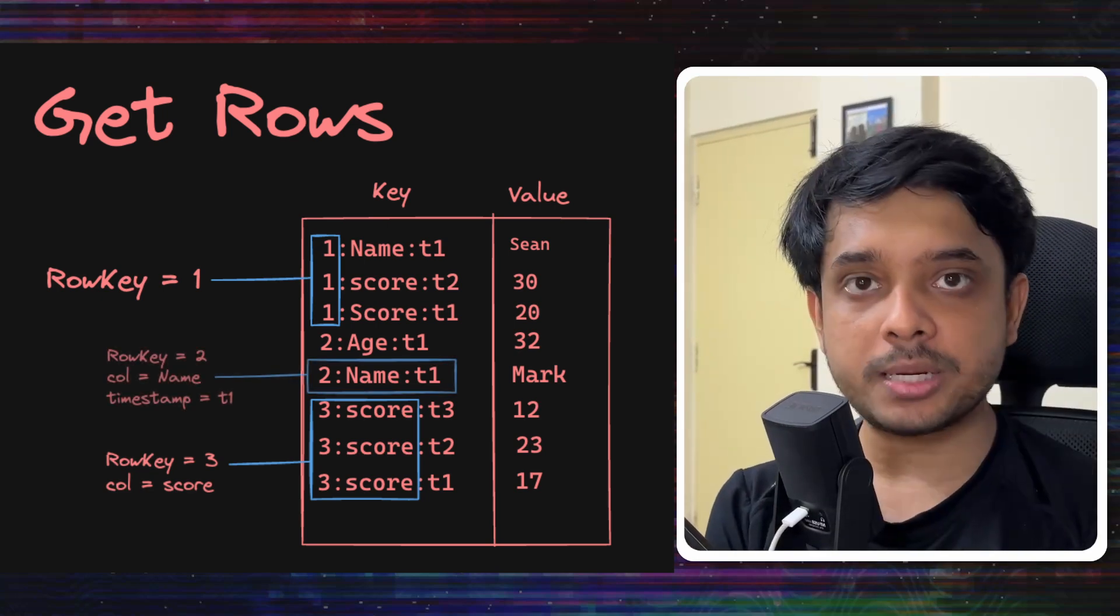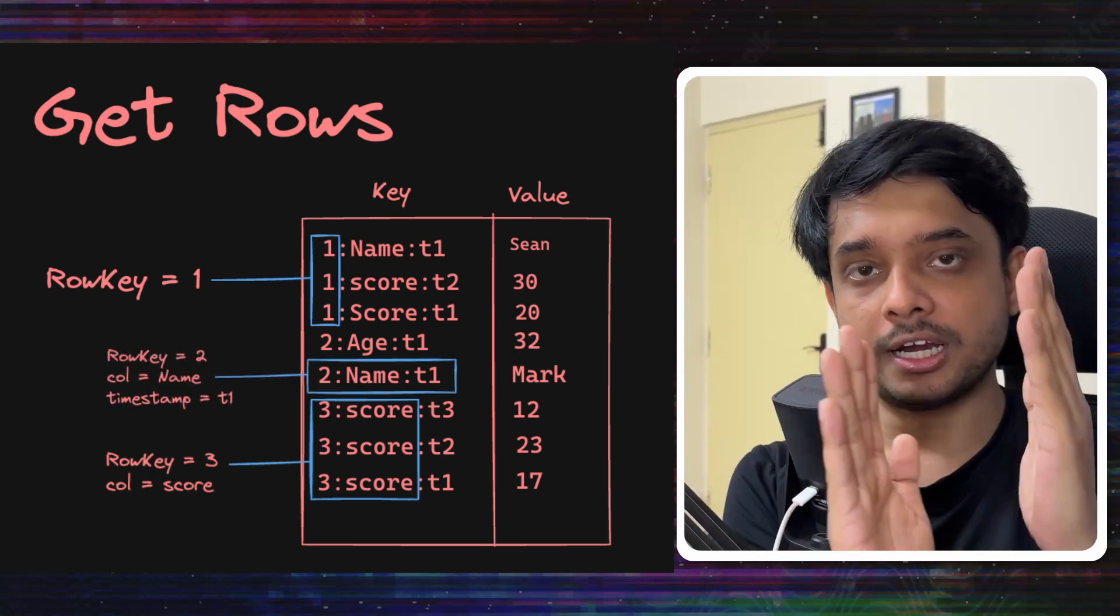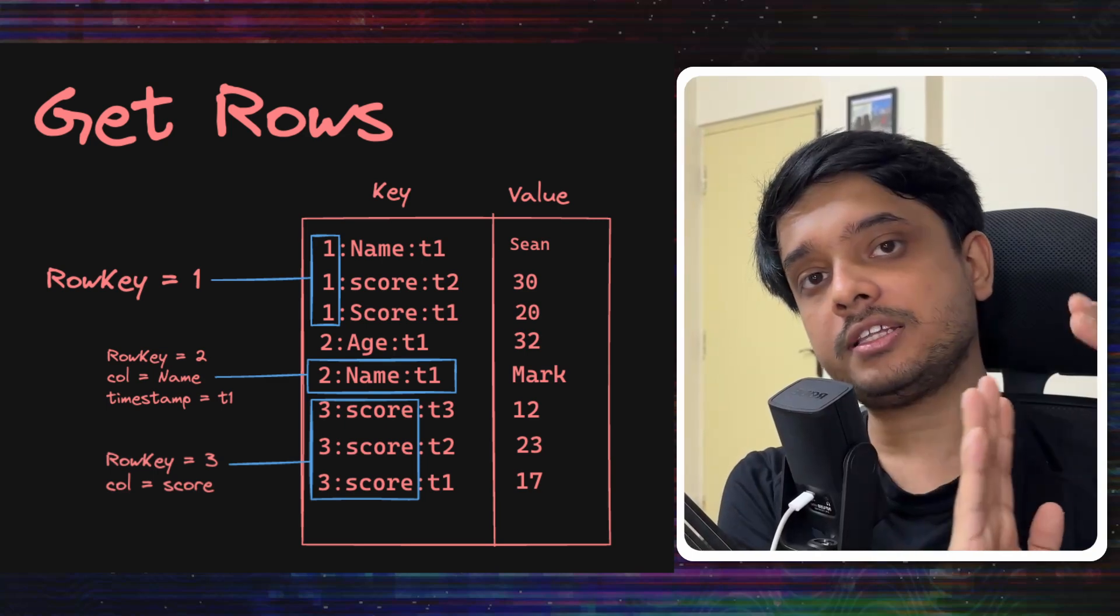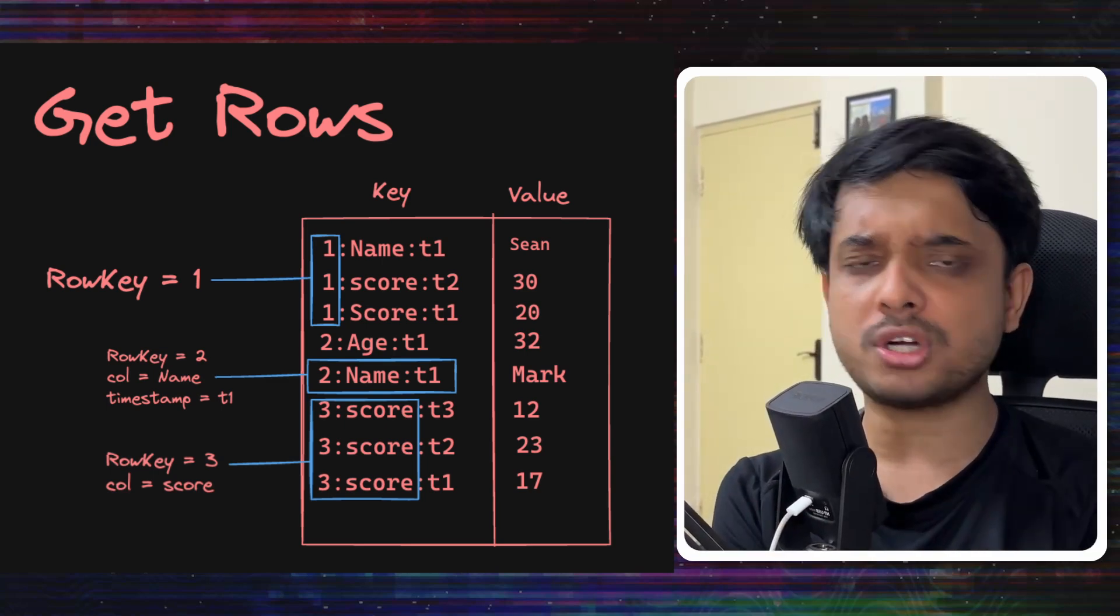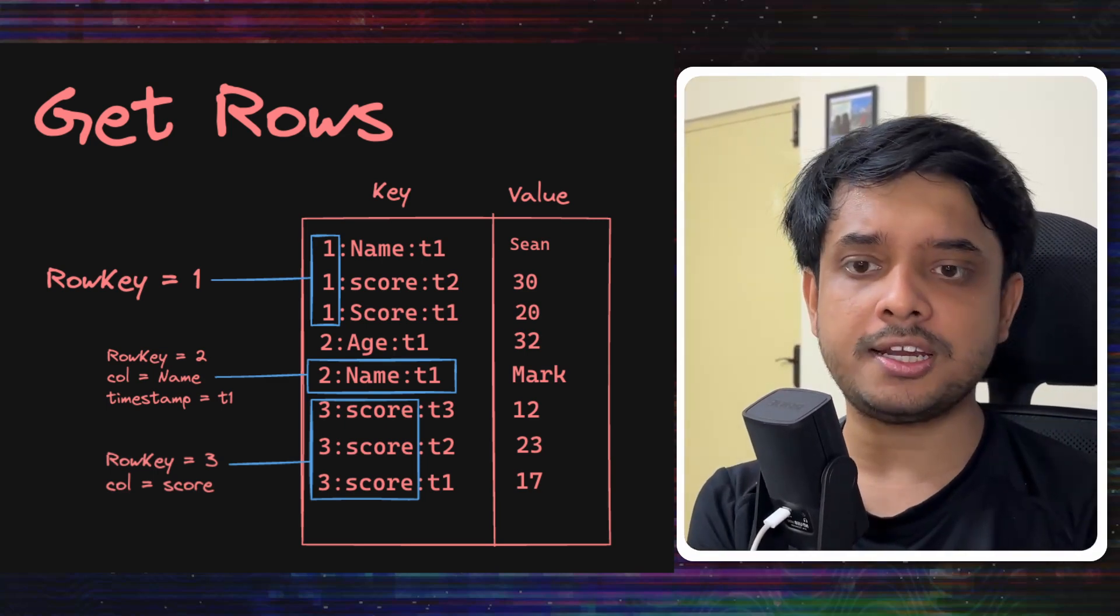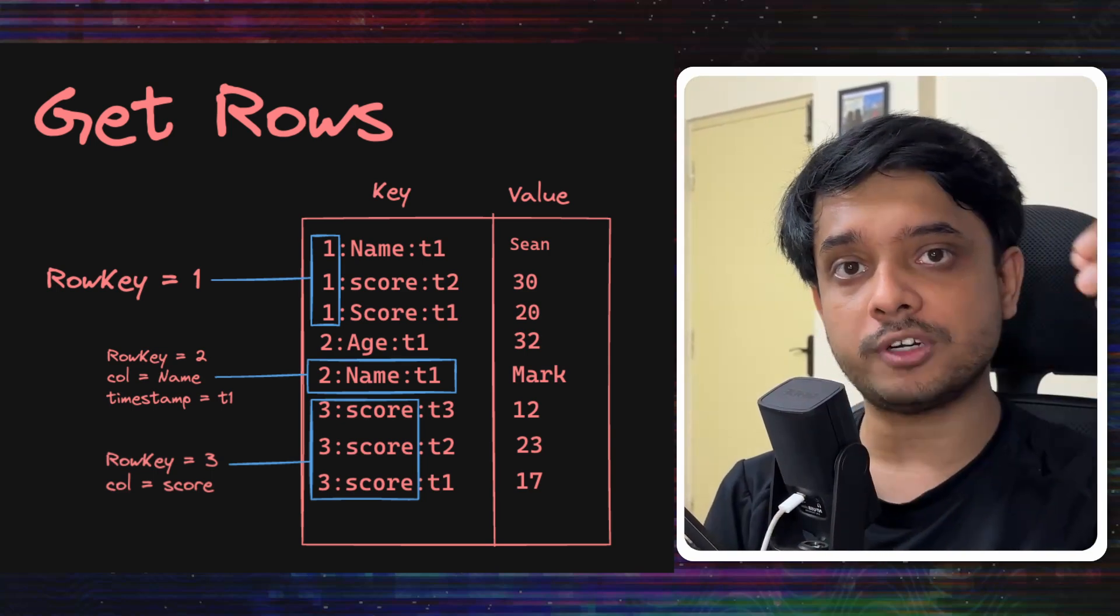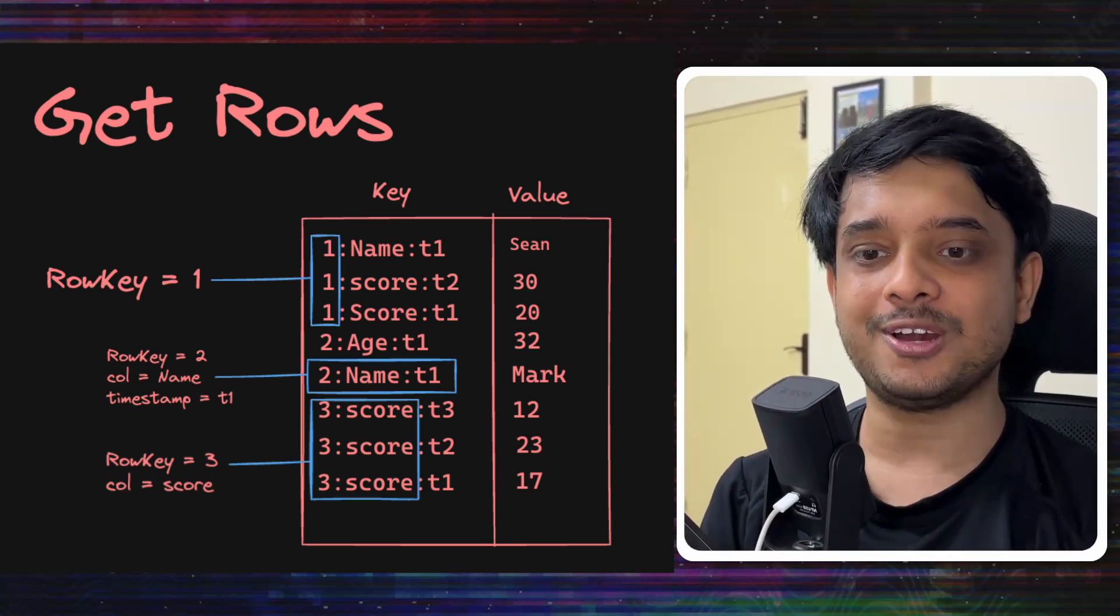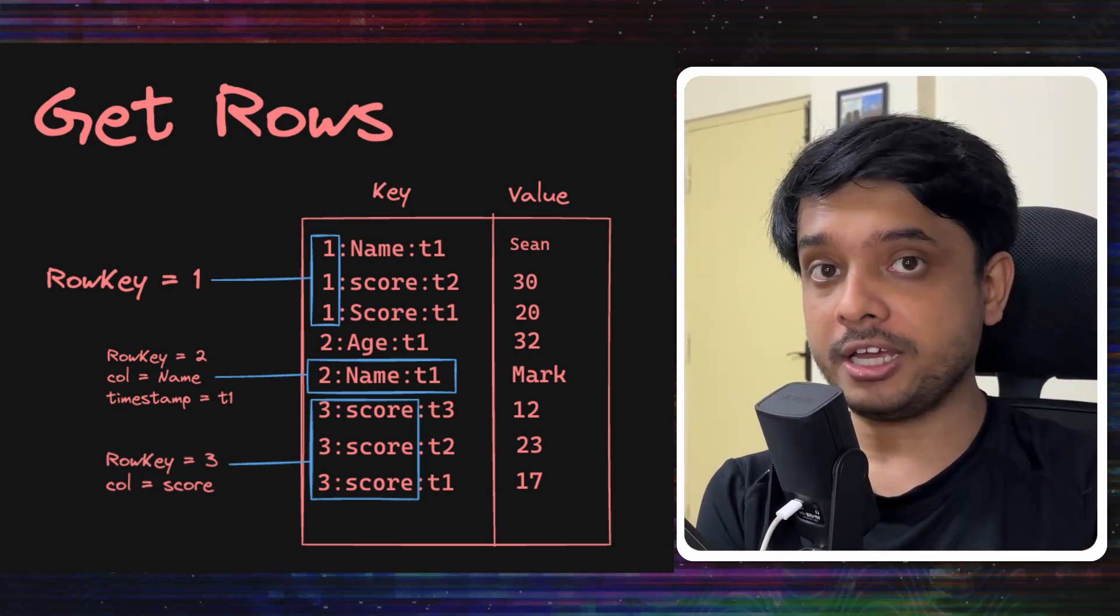Let's say even the timestamp is given to us, then we can take the row ID, we can take the given column name and we can take the given timestamp and do a full key search on RocksDB. It will do it very efficiently and we will get that particular value for that particular row, for the particular column and that particular timestamp.